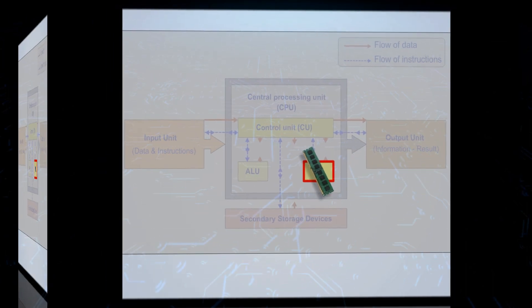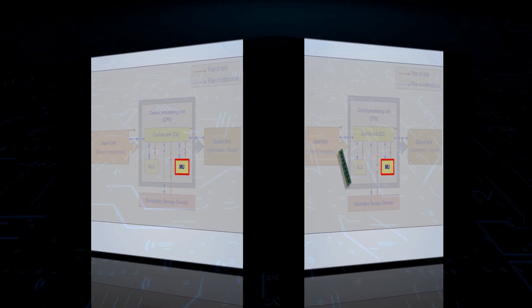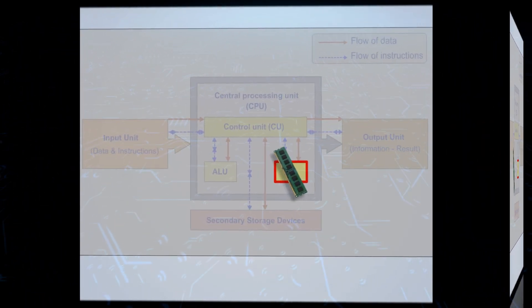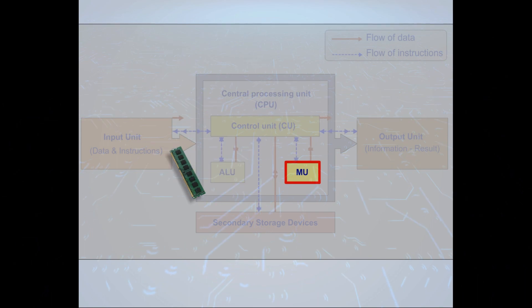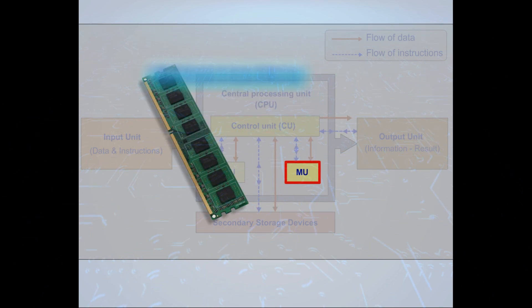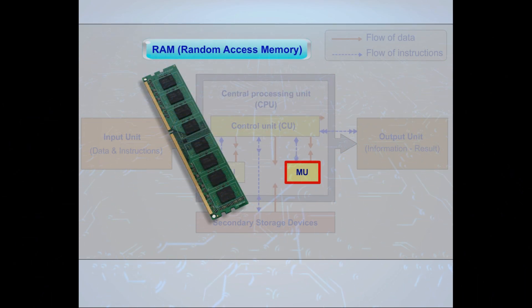Primary memory is further divided into Random Access Memory (RAM). This type of memory is used for temporary data storage while the computer is running. It holds data and program instructions that the CPU is actively using. RAM is volatile, meaning it loses its data when the computer is powered off.